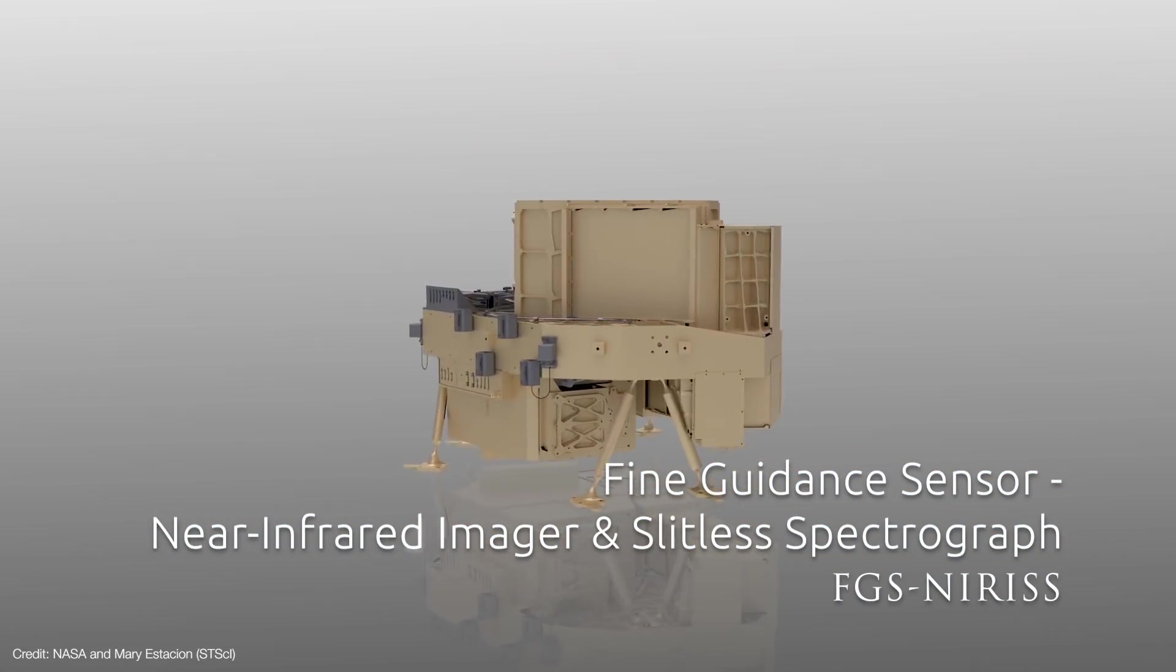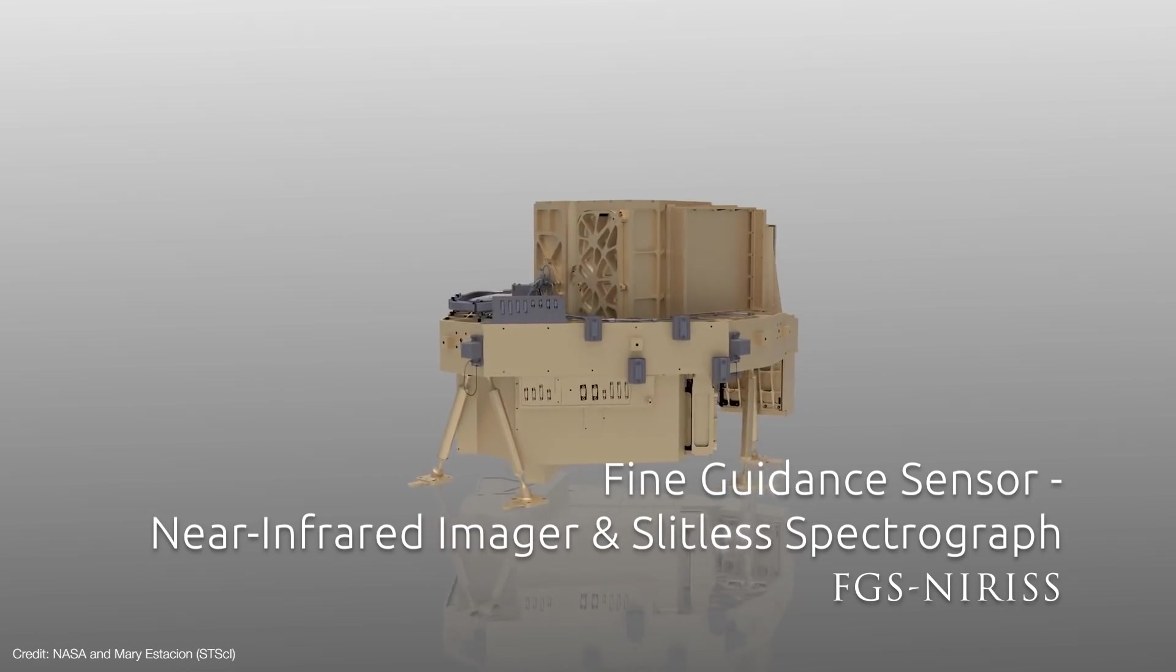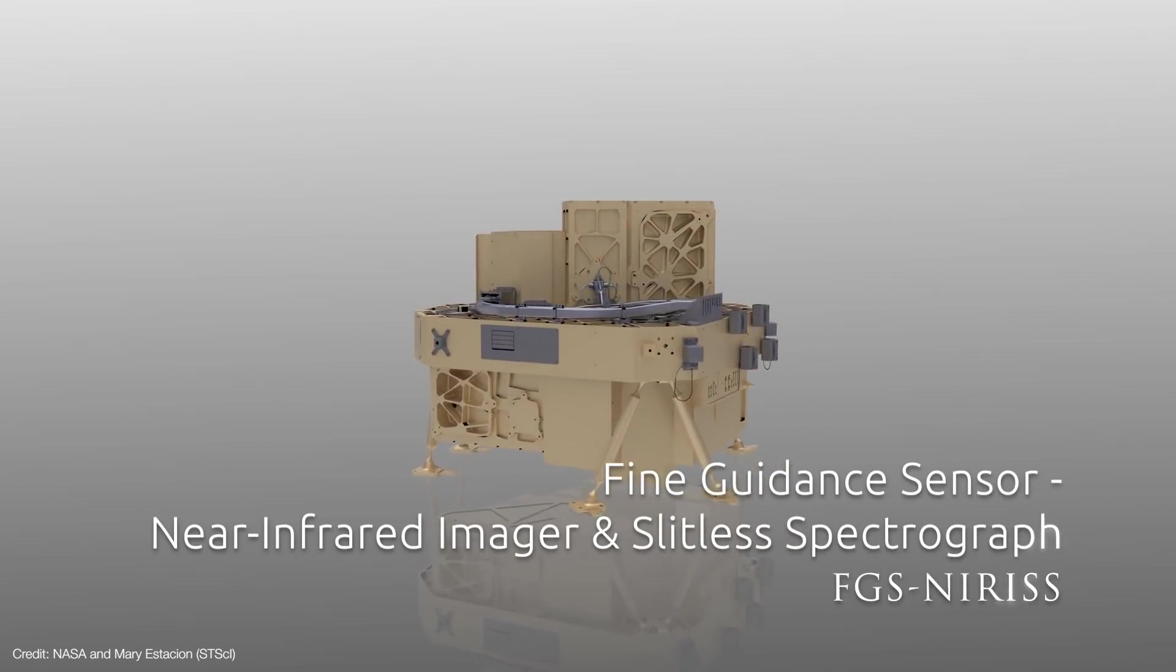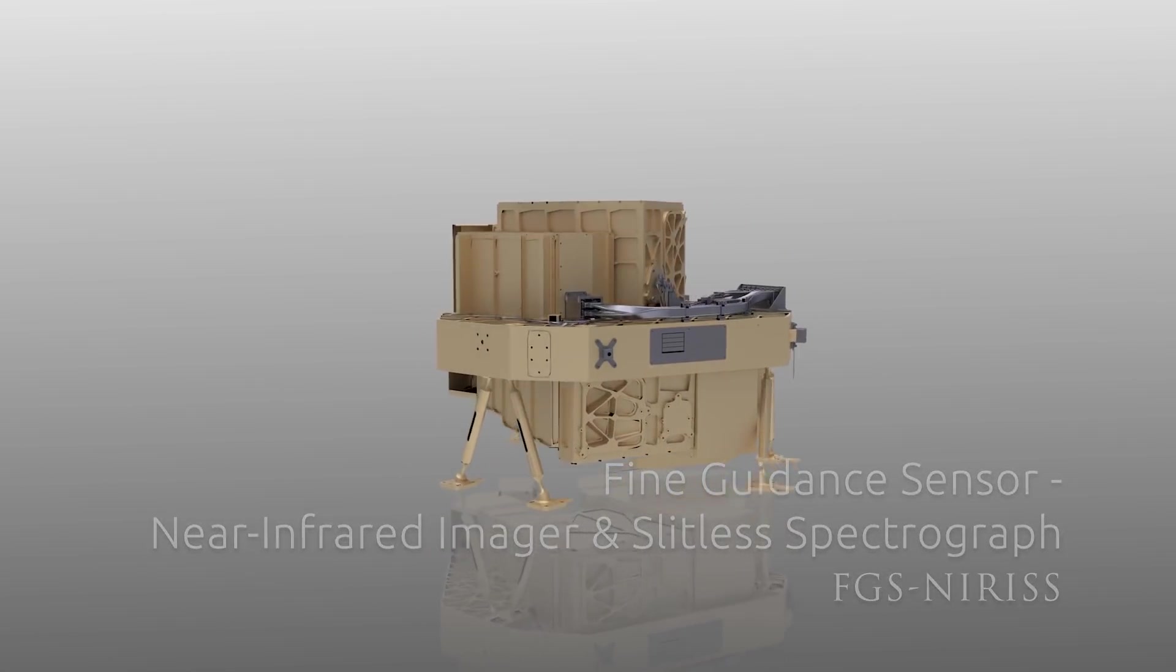Another of Webb's spectrographs is the Near Infrared Imager and Slitless Spectrograph, or NIRISS. It's actually bundled with the fine guidance sensors.